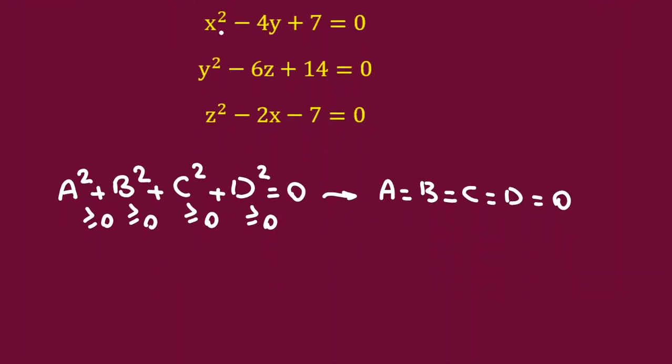We have x squared, negative 4y. If we had negative 4x, it was better. We could change it to something squared and use this. So, what can we do here? I have x squared here, but negative 2x is in this equation. So, if I add these two things, but I have z squared here, and negative 6z is here. So, one thing that is good is to add all these three terms.